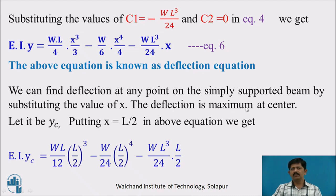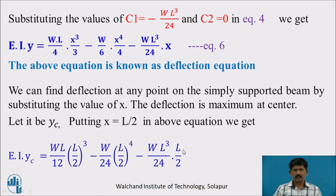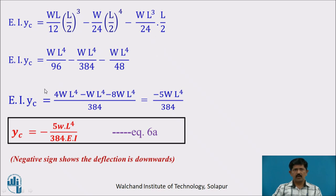For UDL, the deflection is maximum at the center, at x = L/2. Substituting x = L/2 in Equation 6 to find deflection yC at the center: EI·yC = WL/12·(L/2)³ − WL/24·(L/2)⁴ − WL³/24·(L/2). Solving, EI·yC = −WL⁴/384, therefore yC = −WL⁴/384EI (Equation 6A). The negative sign indicates the deflection is downwards.